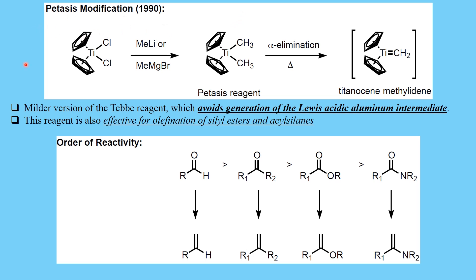Later, in the 1990s, Petasis came up with a modification — a reagent that was much more selective and required much milder conditions. Starting from titanocene dichloride treated with either methyllithium or methylmagnesium bromide, you get Petasis reagent, which has two methyl groups instead of the two chlorides. Upon heating, alpha-elimination takes place, producing methane gas, which is completely unreactive and leaves the reaction medium, leaving only the reactive titanocene methylidene complex.